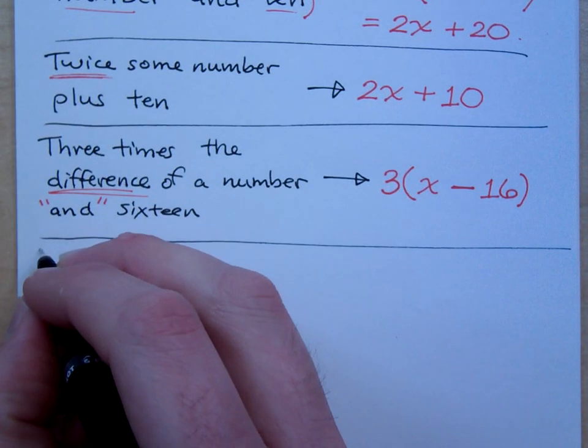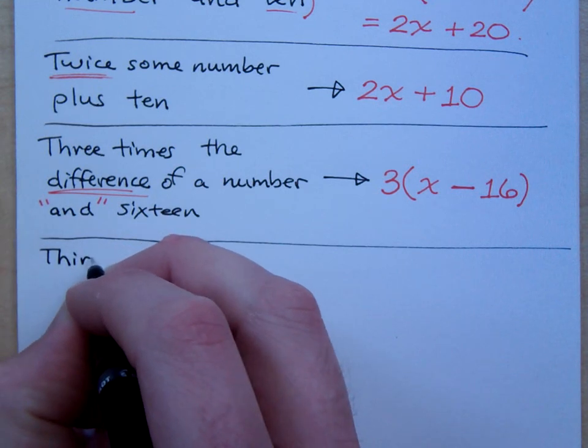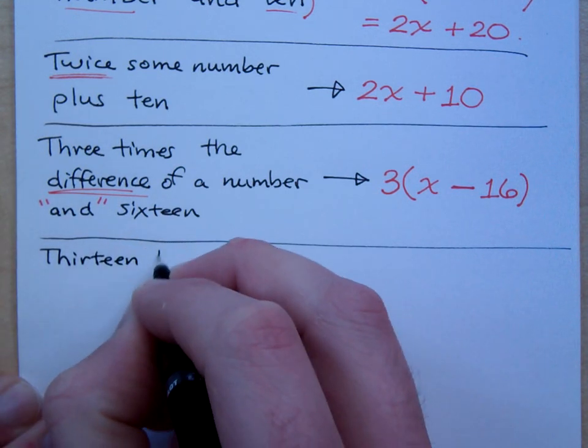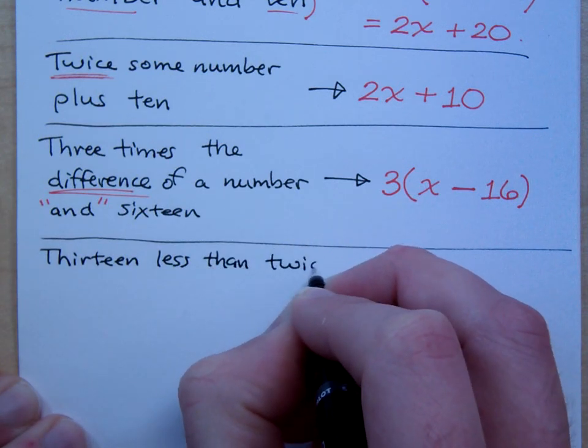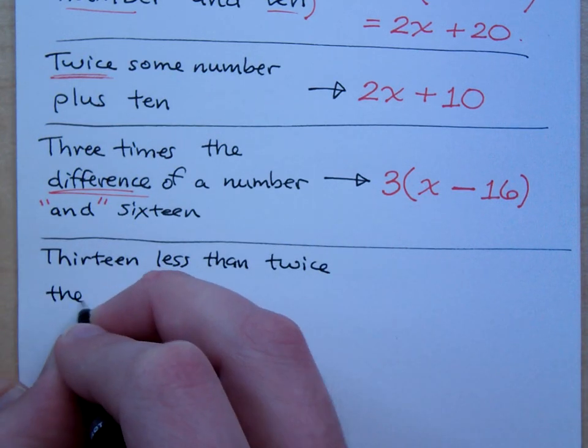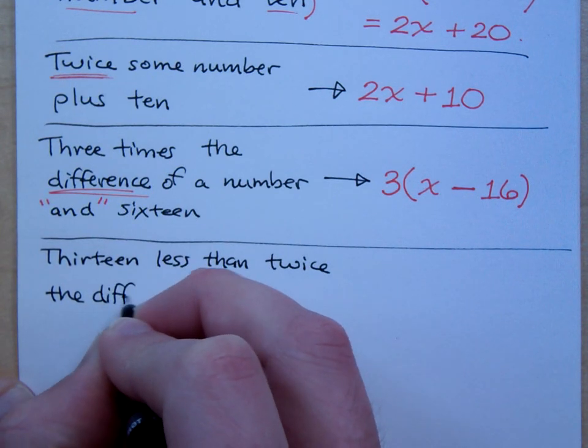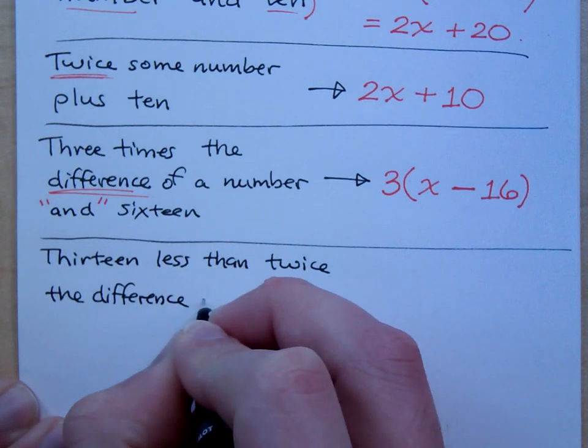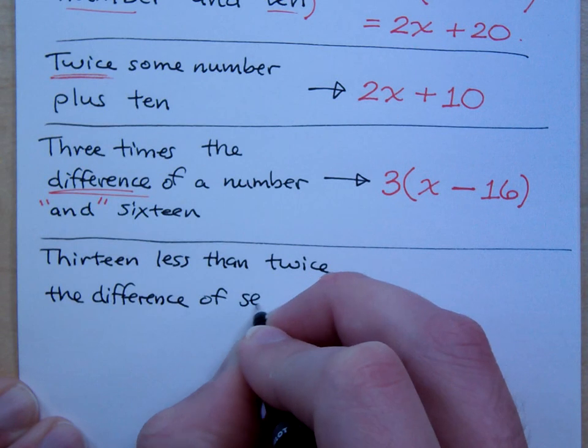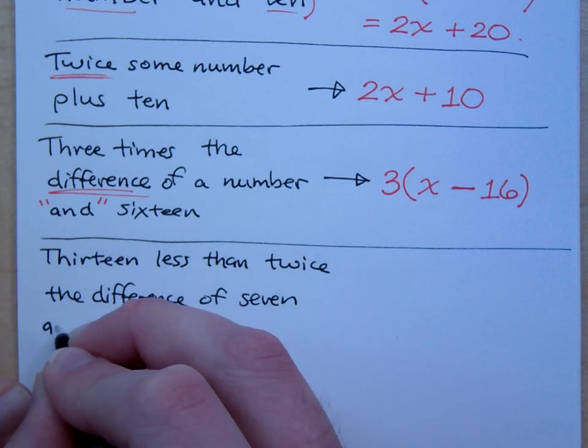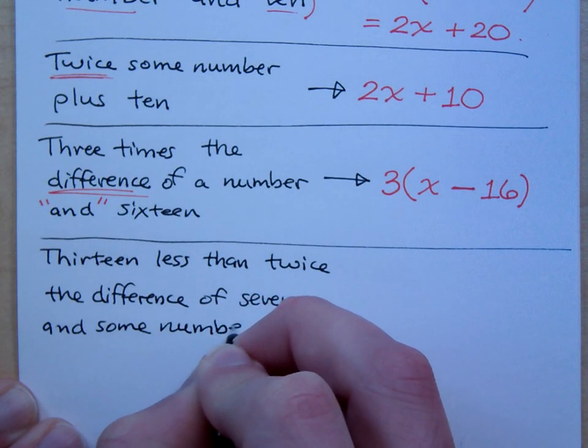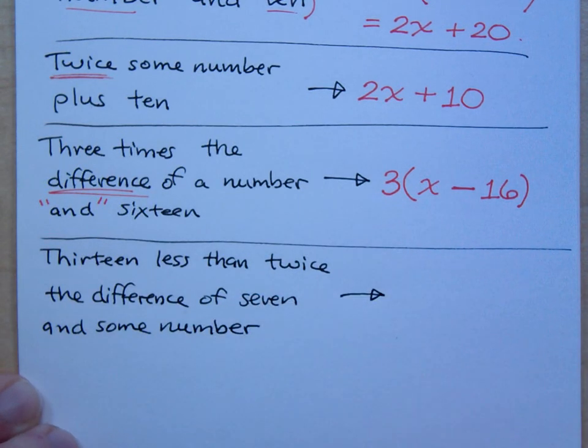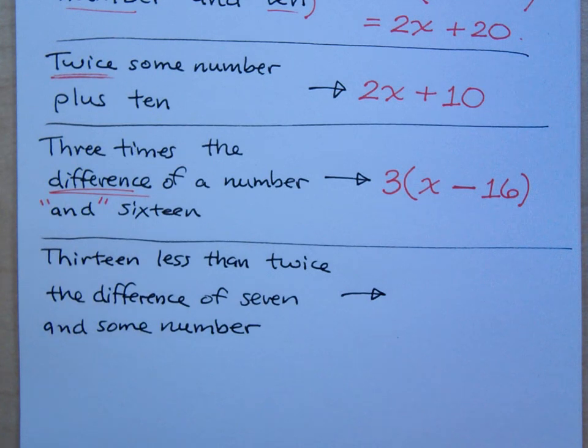If I say this. Thirteen less than twice the difference of seven and some number. Thirteen less than twice the difference of seven and some number.